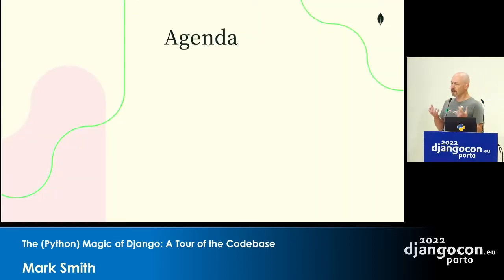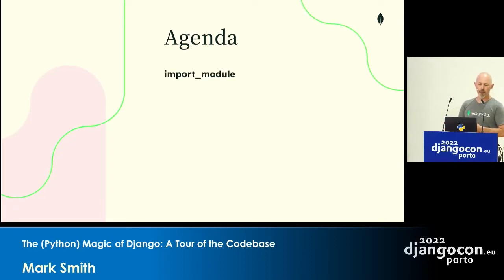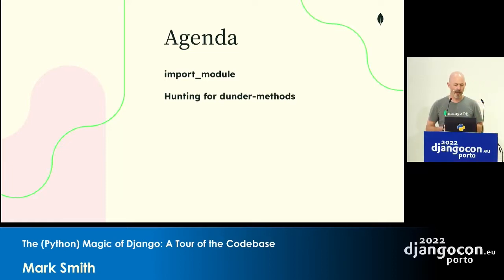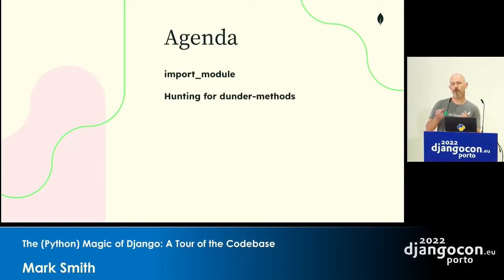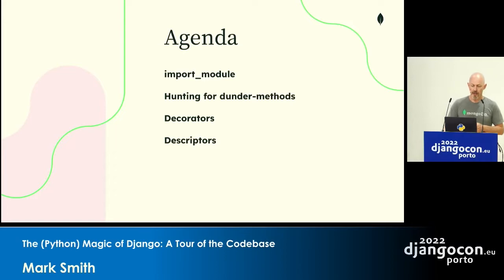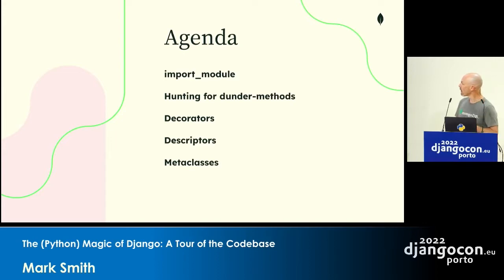The agenda of this talk: we're going to have a little amuse-bouche looking at dynamically loading modules with import module. Then we'll dive deeper and hunt through Django for various dunder methods and dunder attributes — variables with a double underscore at the start and end that Python treats in a special way, a reserved namespace. We'll talk about decorators, descriptors, and then very inadvisedly dive into metaclasses, because I wanted to talk very fast for 30 minutes.